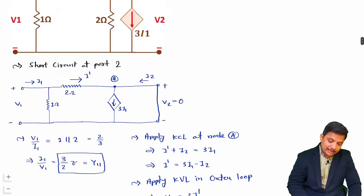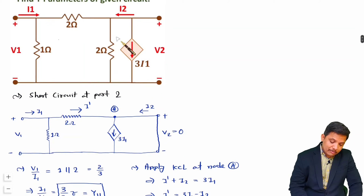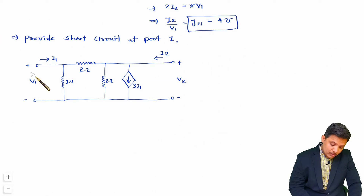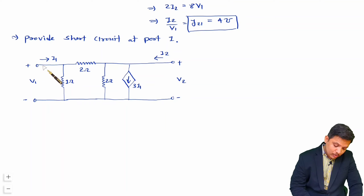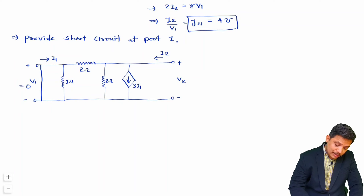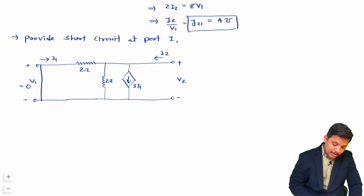Now we will provide a short circuit at port 1. When we provide short circuit at port 1, V1 becomes 0, and the 1Ω resistor gets shorted, so I need to remove this 1Ω resistor from the circuit.